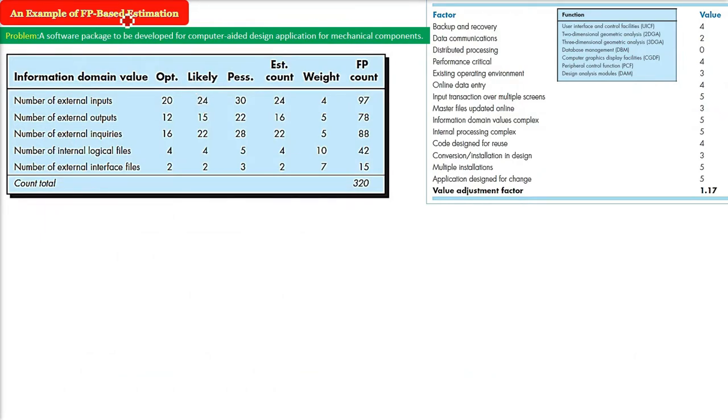Now function point based estimation. For that first you have to know about the function point analysis that we have already discussed. You can revisit previous chapters and get an idea of that, but I will give you an idea here also. First there are five information domain value or input parameters. For a computer, the problem is there is a computer aided design software we have to develop and this software package is to be developed for computer aided design application for mechanical components.